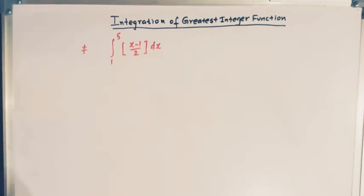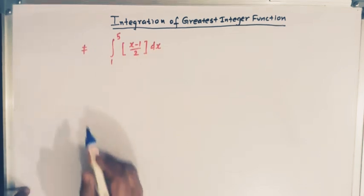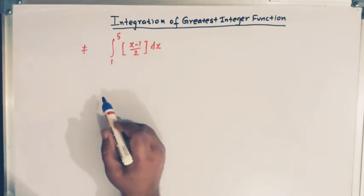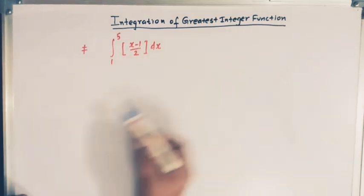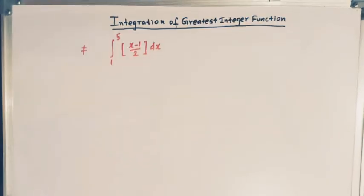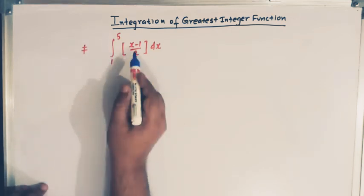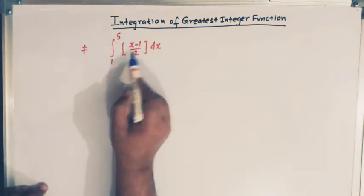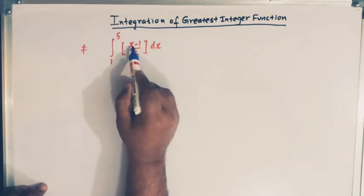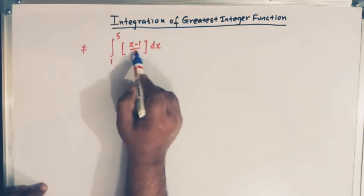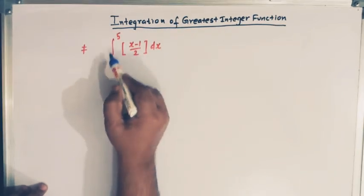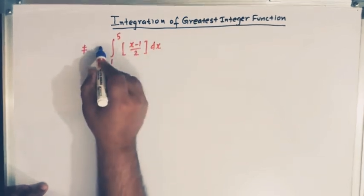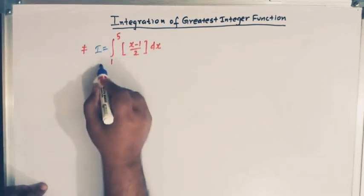Hello viewers, in today's class we are going to take up an integration involving the greatest integer function. We have to integrate the greatest integer of (x minus 1) over 2 from 1 to 5. Let us call this integral as I.